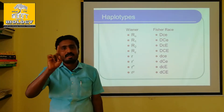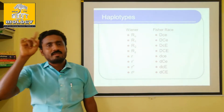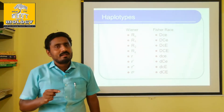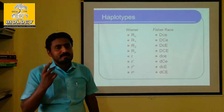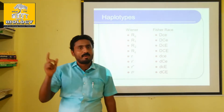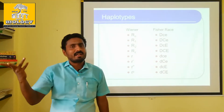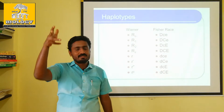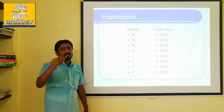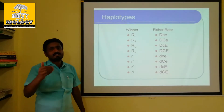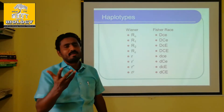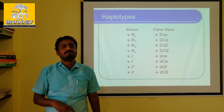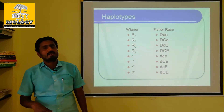So, capital R, small r — capital R, capital R — that means there is a positive blood group. Small r, small r — that is a negative blood group. That means, next to capital R, small r: if you read this rule, it is like a monohybrid cross. Capital R, small r is positive.